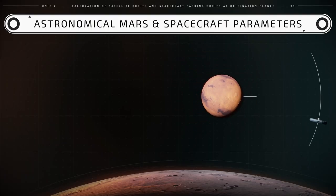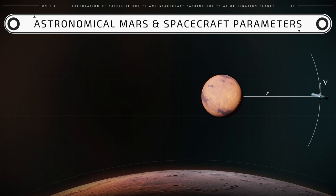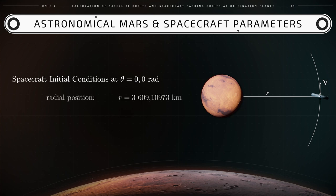We will place the spacecraft above Mars at an altitude of 219.18 km from the surface of the planet. Since the mean radius of Mars equals 3,389.92 km, the distance lowercase r between the center of mass of Mars and the spacecraft equals exactly 3,609.10 km.